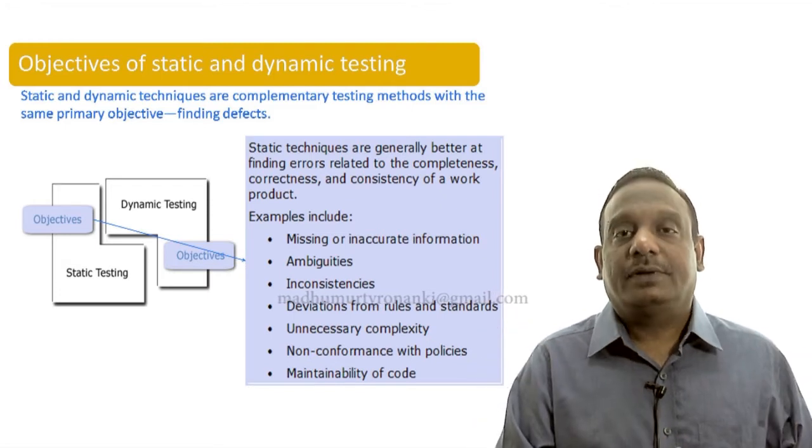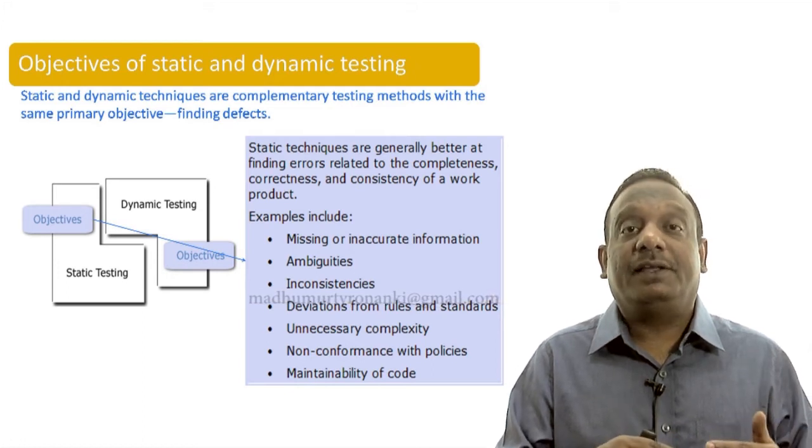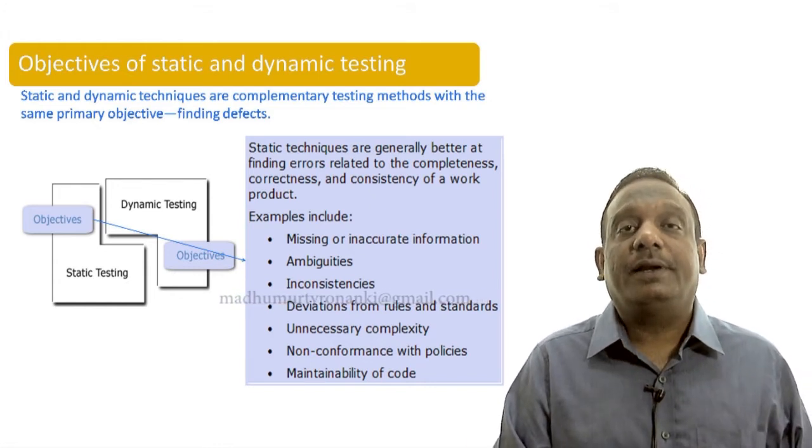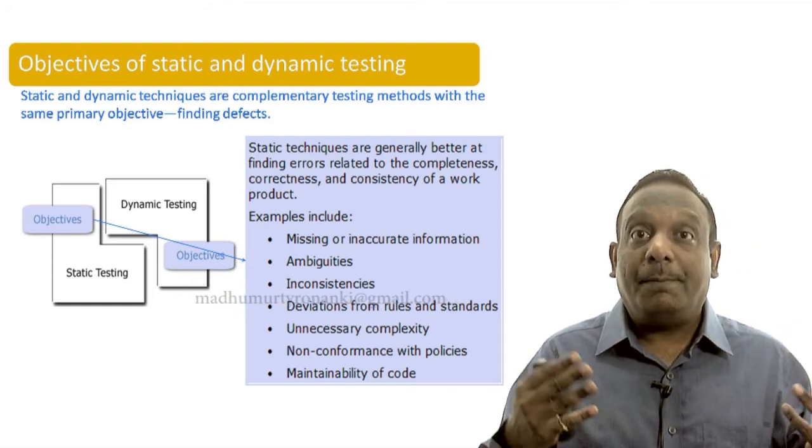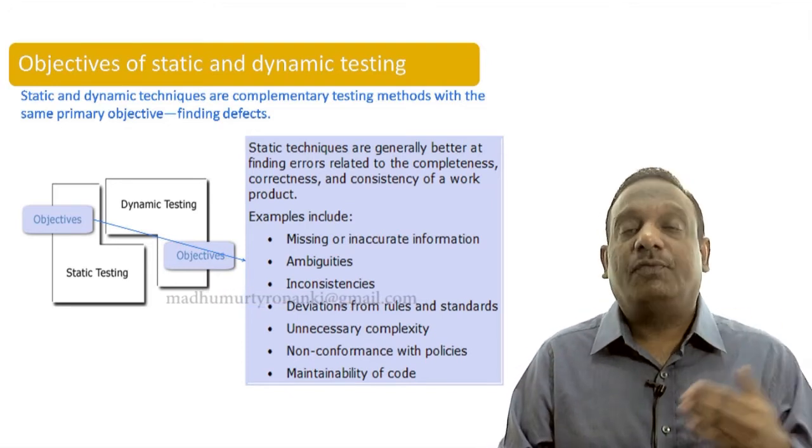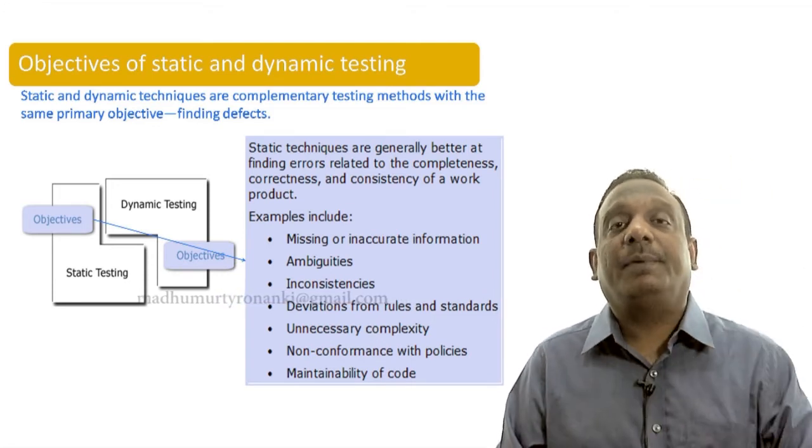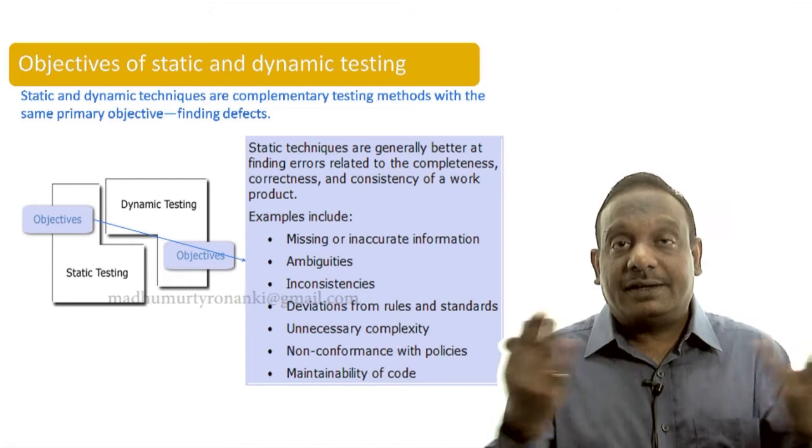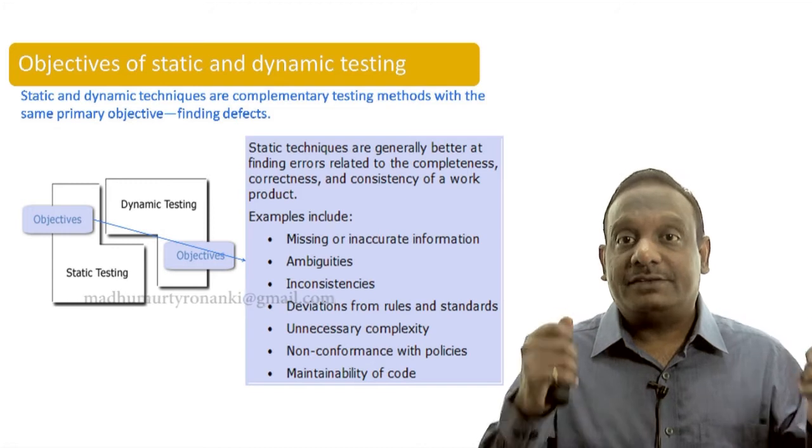Typical examples include missing or inaccurate information. If a requirement is wrongly written or if an important requirement is missing from the requirement document, then that can be found only by static techniques. And ambiguities in requirements, if it is not specified with lot of clarity, then it can be found only by applying static techniques. Inconsistencies. One part of the requirement is saying one thing, another part of the requirement is contradicting what we said earlier. That is called inconsistency. Those kind of things can be found only by static examination.